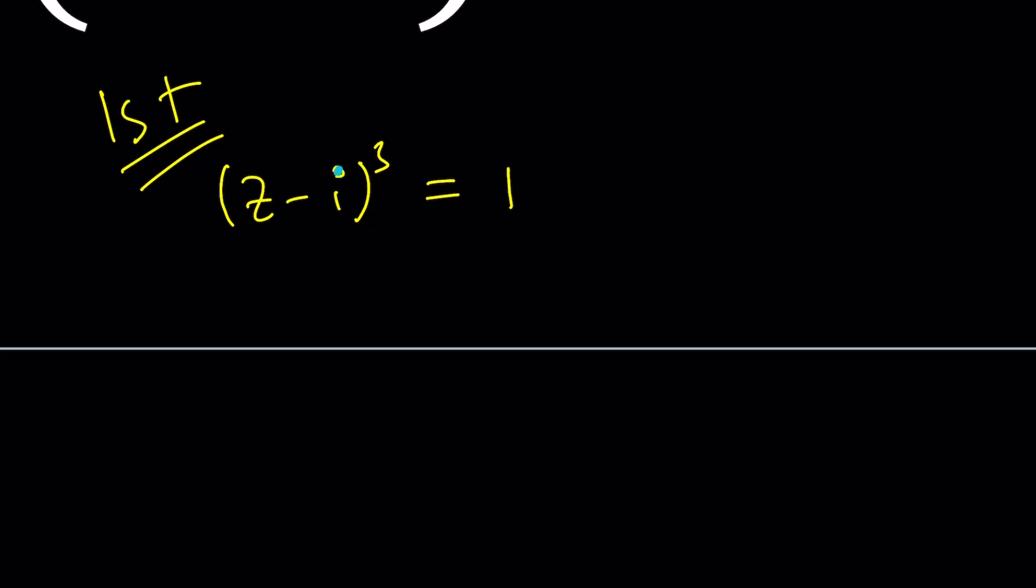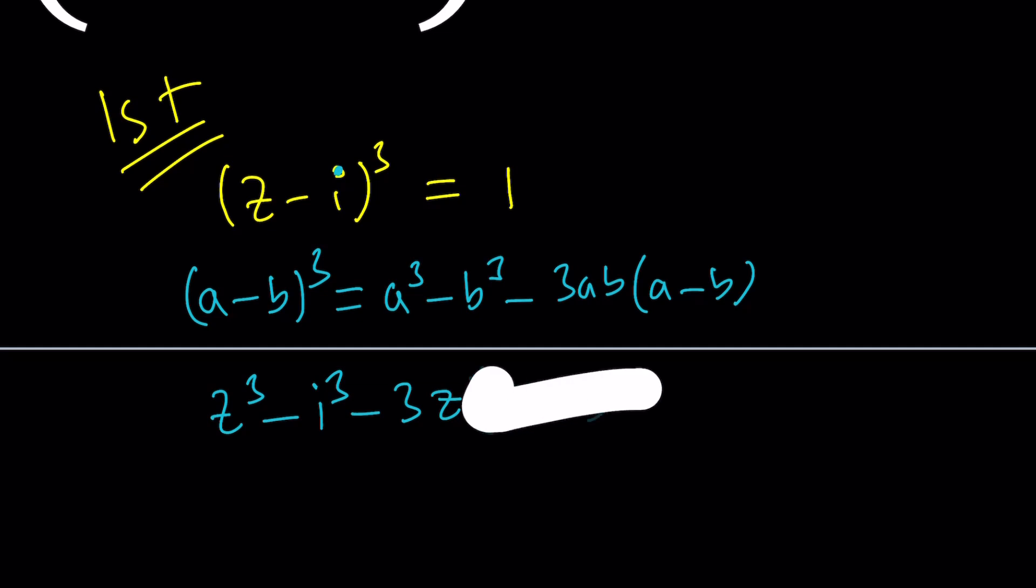So if you are cubing A minus B, a lot of times I use a formula that I think is better. It's A cubed minus B cubed minus 3AB multiplied by A minus B. But if you want, you can also use just the binomial theorem. That's also fine. So Z cubed minus I cubed minus 3ZI multiplied by Z minus I. You see how quick that is? We don't have to square anything. We're just going to distribute and of course that's going to give us the exact same thing at the end, but we don't do it right away. So this is equal to one.